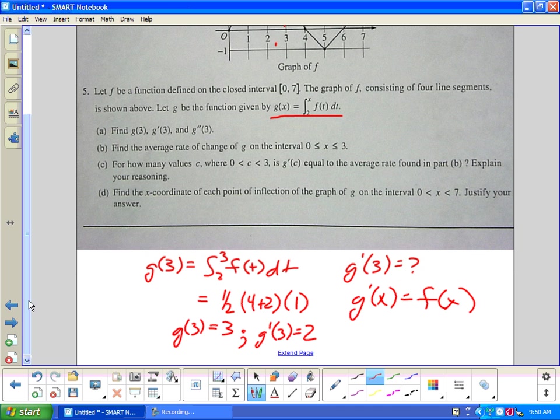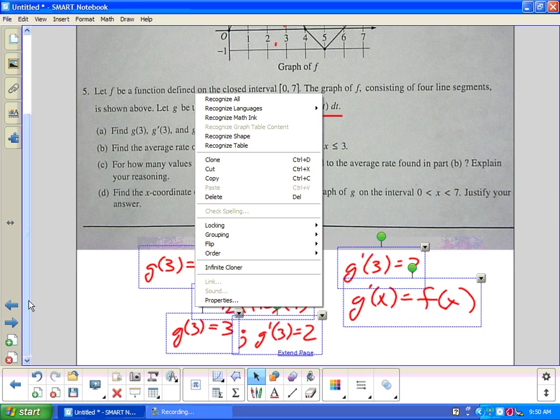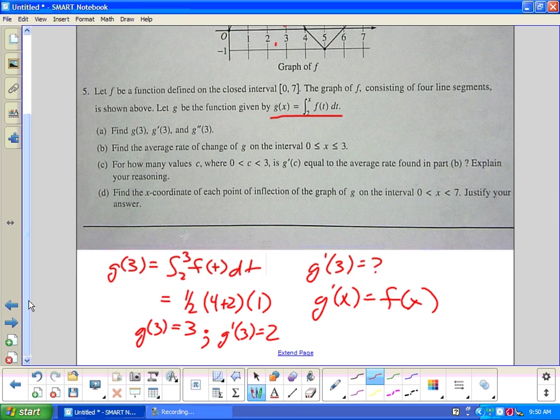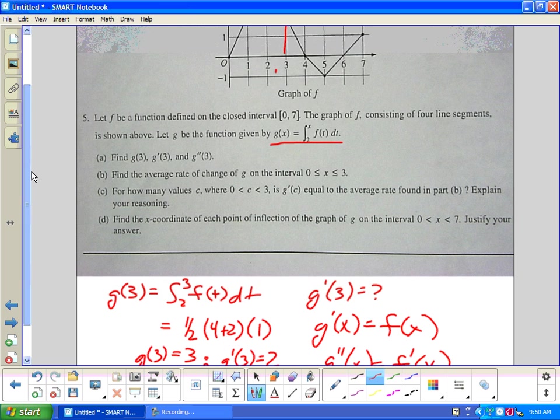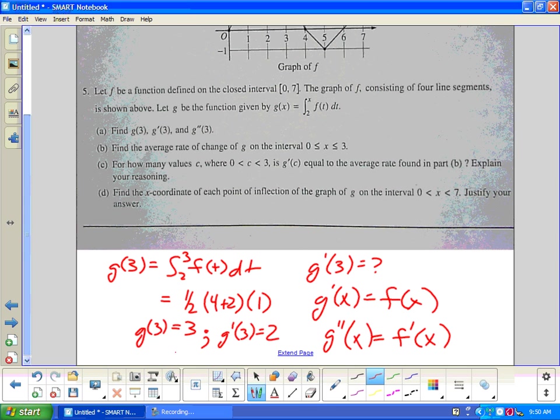Finally, the next one says g prime prime of 3 equals question mark. Well, if I'm going to do that problem, I have to take the derivative of g prime. The derivative of g prime is f(x). So g double prime of x is just going to be f prime of x or the derivative of x. The derivative of x is just the slope of that point. So at 3, if I look at the slope of this line, I would say it has a rise of negative 2 and a run of 1. So the slope is negative 2. So g double prime of 3 is negative 2.